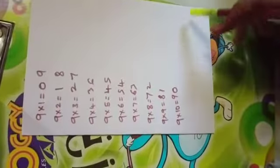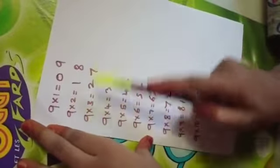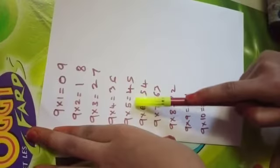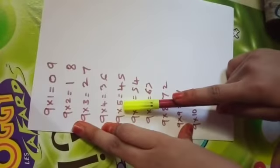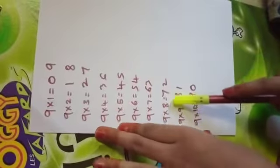So, now let me read the table so that we will know if it is correct or wrong. 9×1=9, 9×2=18, 9×3=27, 9×4=36, 9×5=45, 9×6=54, 9×7=63, 9×8=72, 9×9=81, 9×10=90.